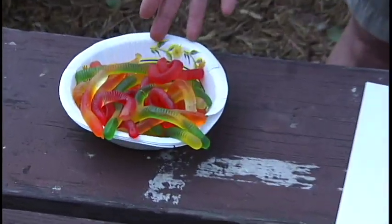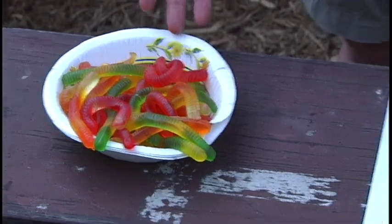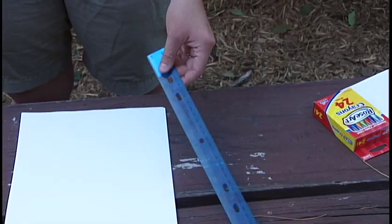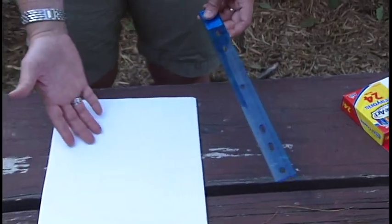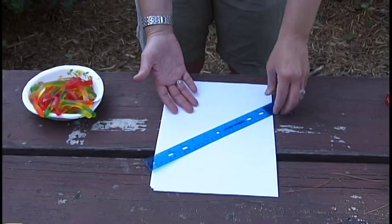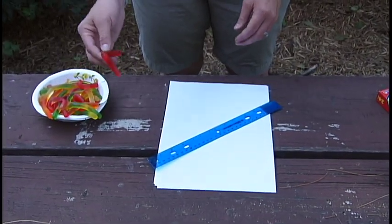This is a simple activity to have your students working on process and math skills by measuring. What you're going to want to do is give each student a sheet of paper and a ruler, then you're going to want to get a gummy worm for each one of your students.